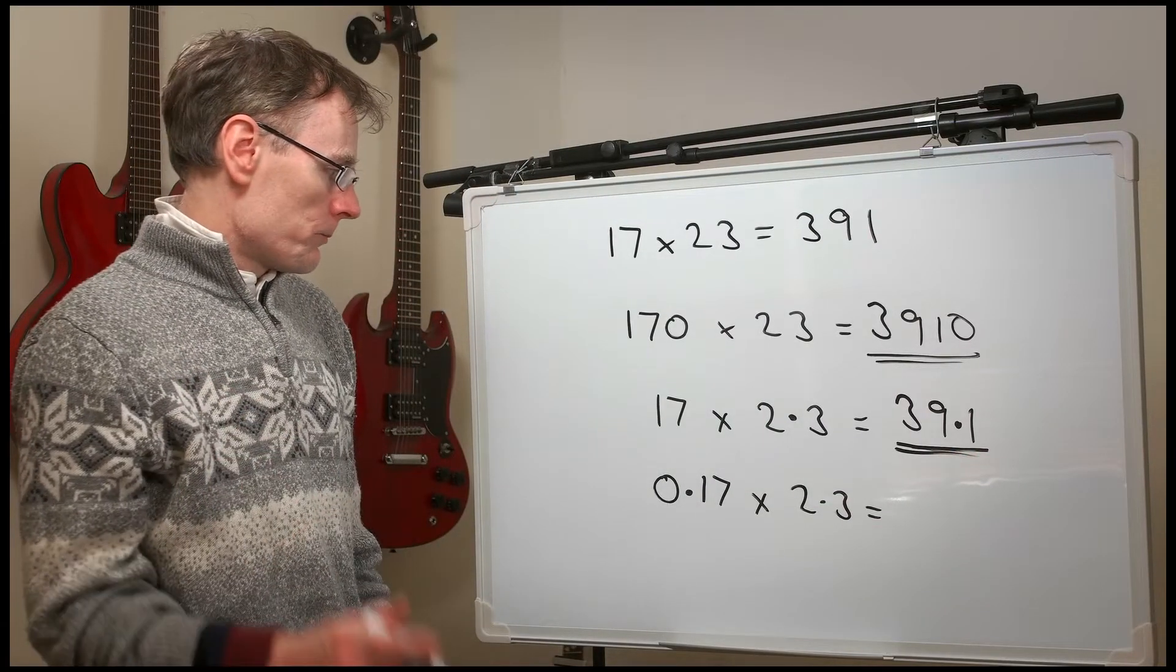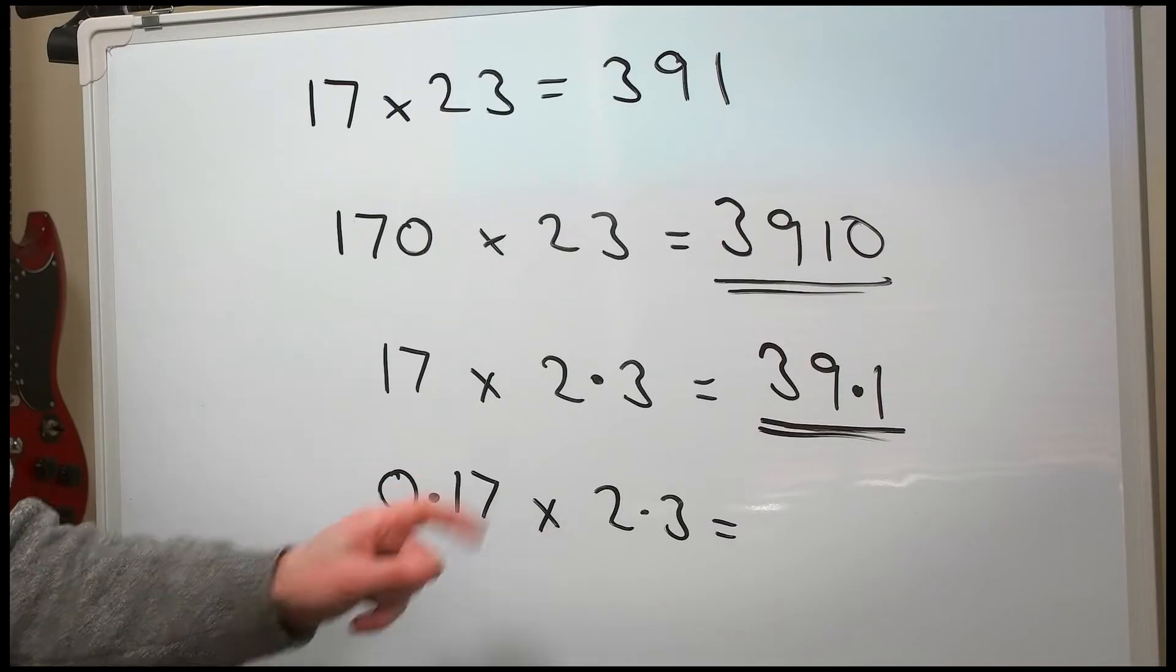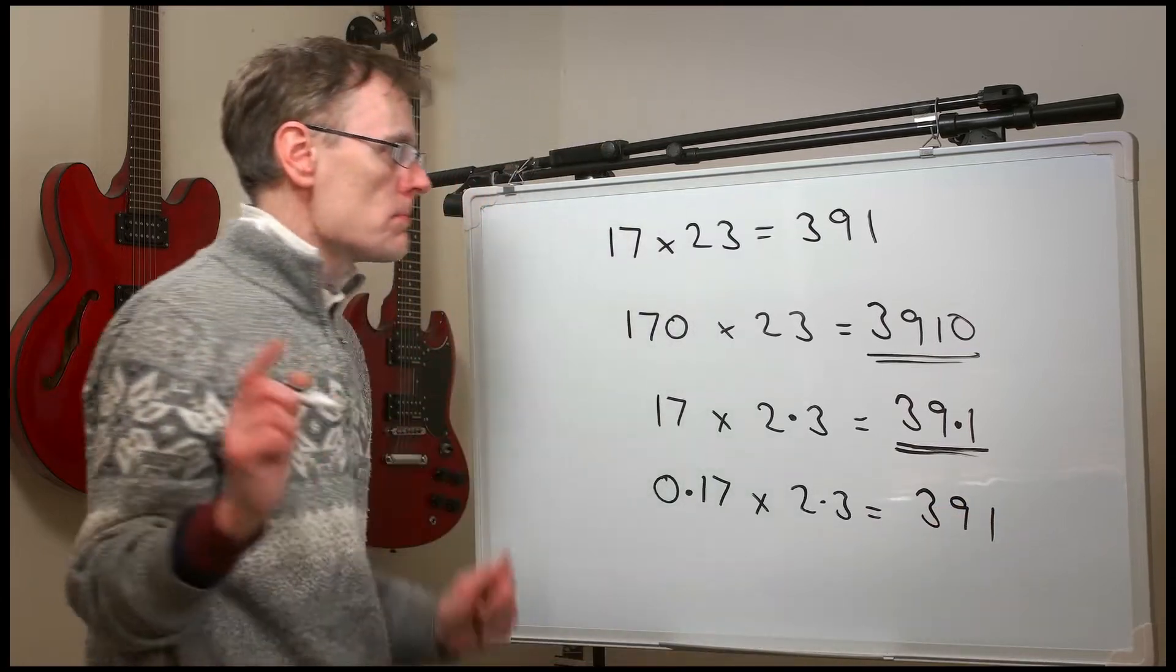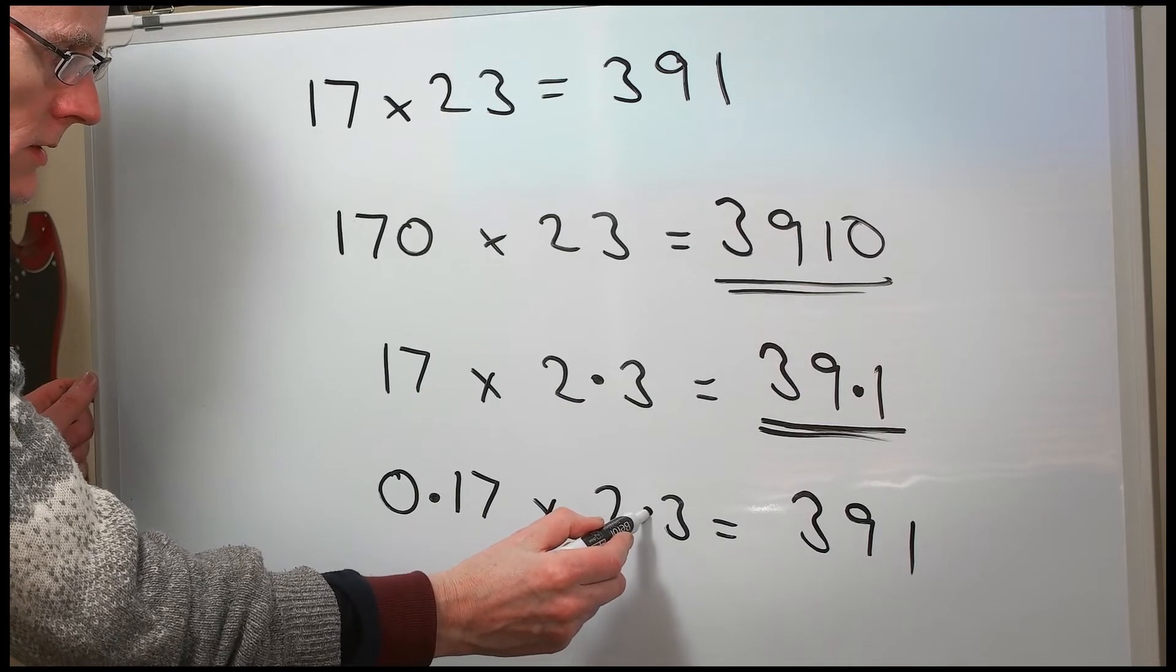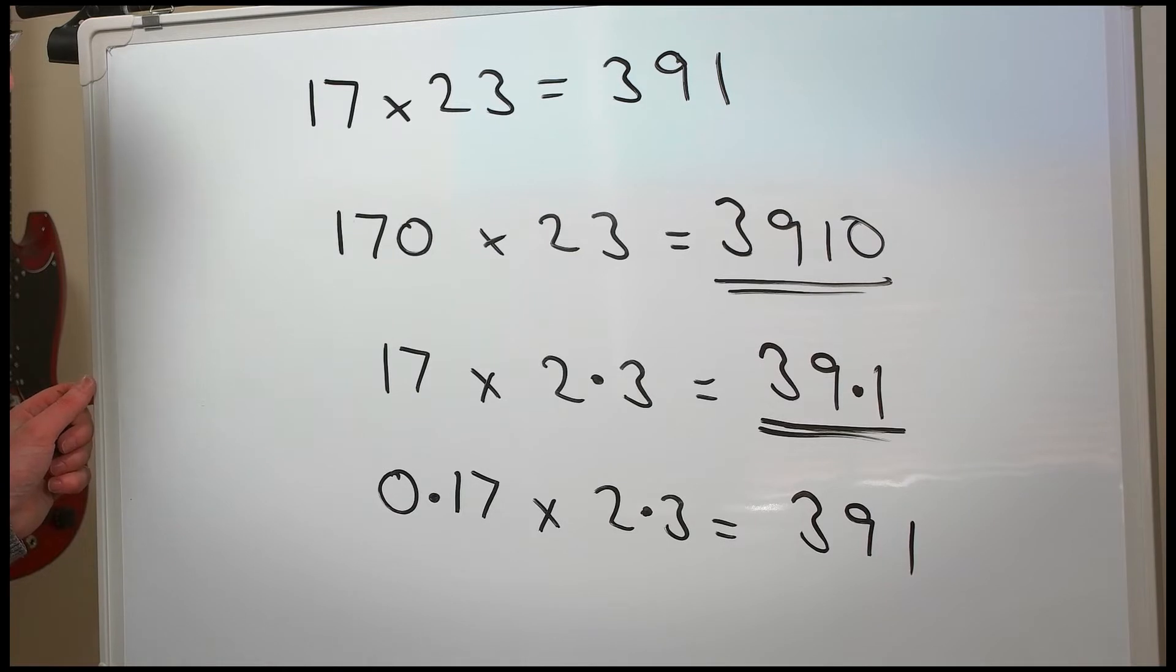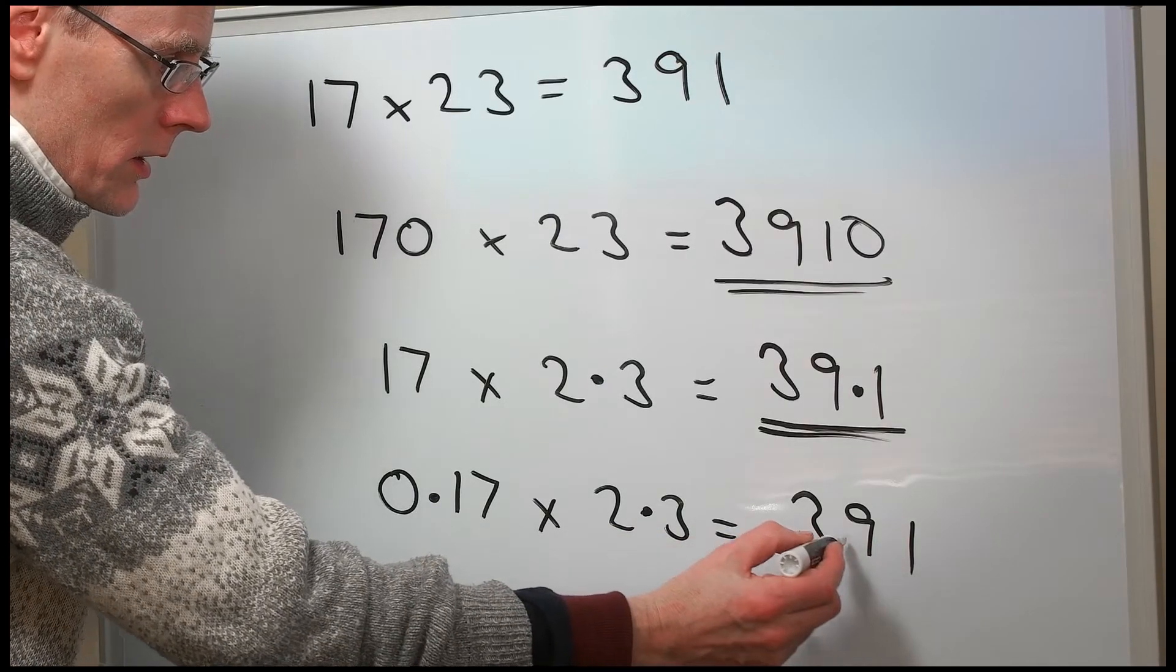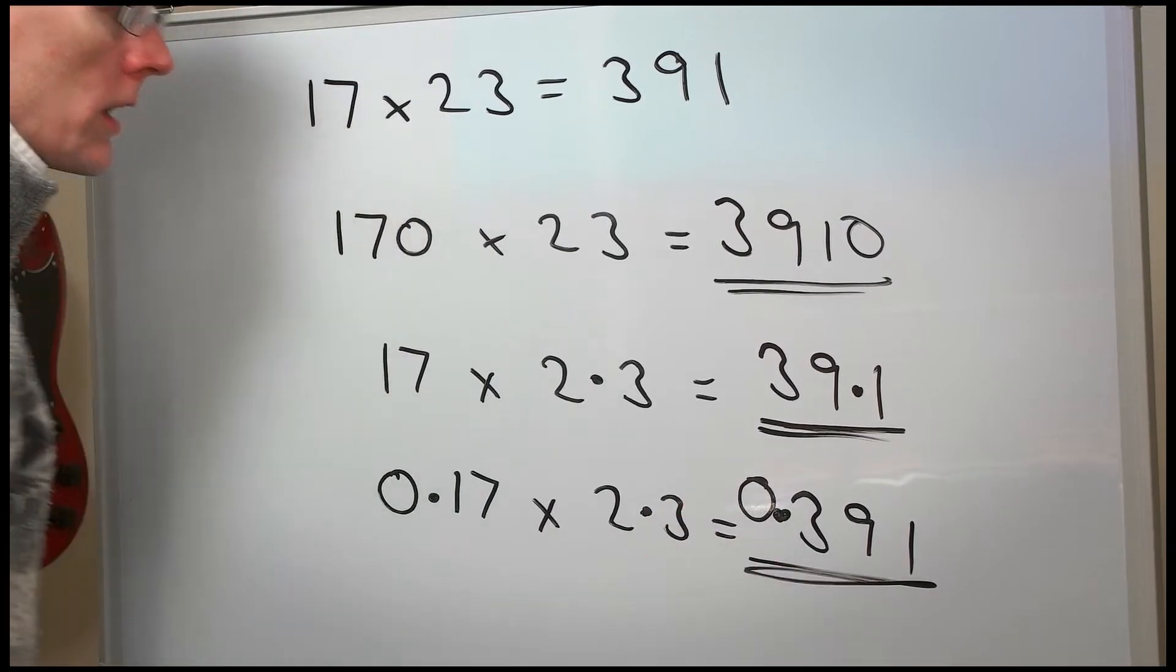And the last one. This one is much smaller. 0.17 times 2.3. So it's going to be something like 391, but that's much too big. This is making it 10 times smaller, and this one's making it another 100 times smaller. So now we need to divide the answer by 10, 100, 1000. 10, 100, 1000 times smaller. 0.391.